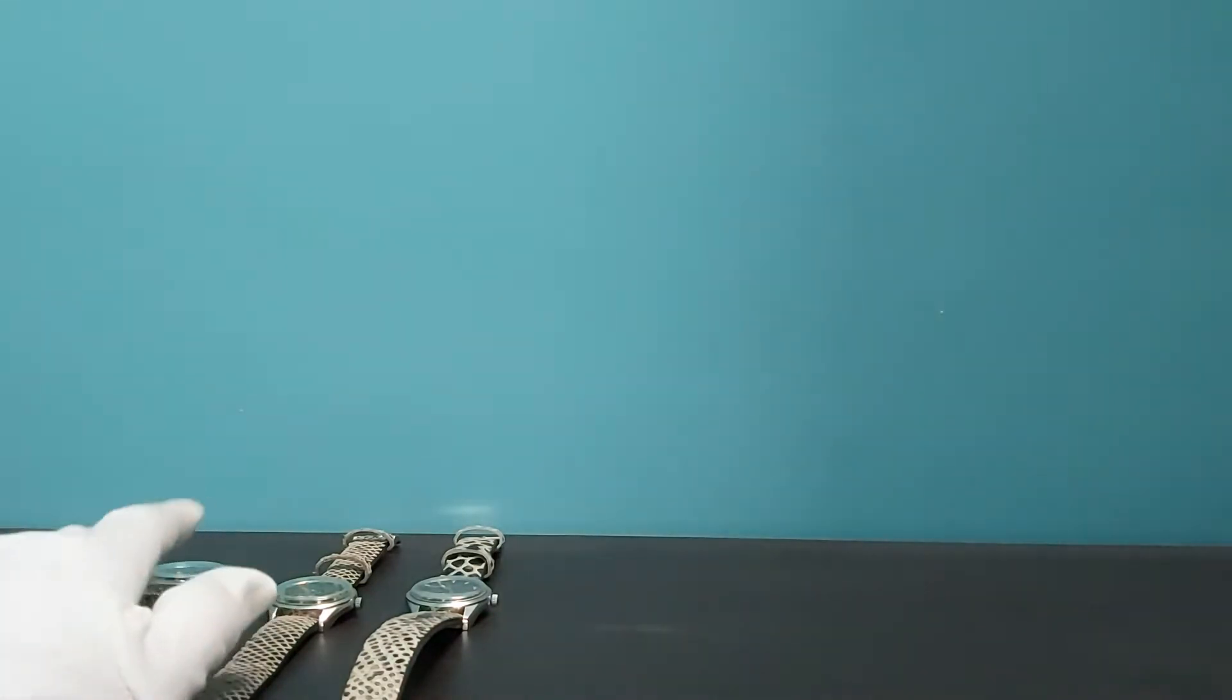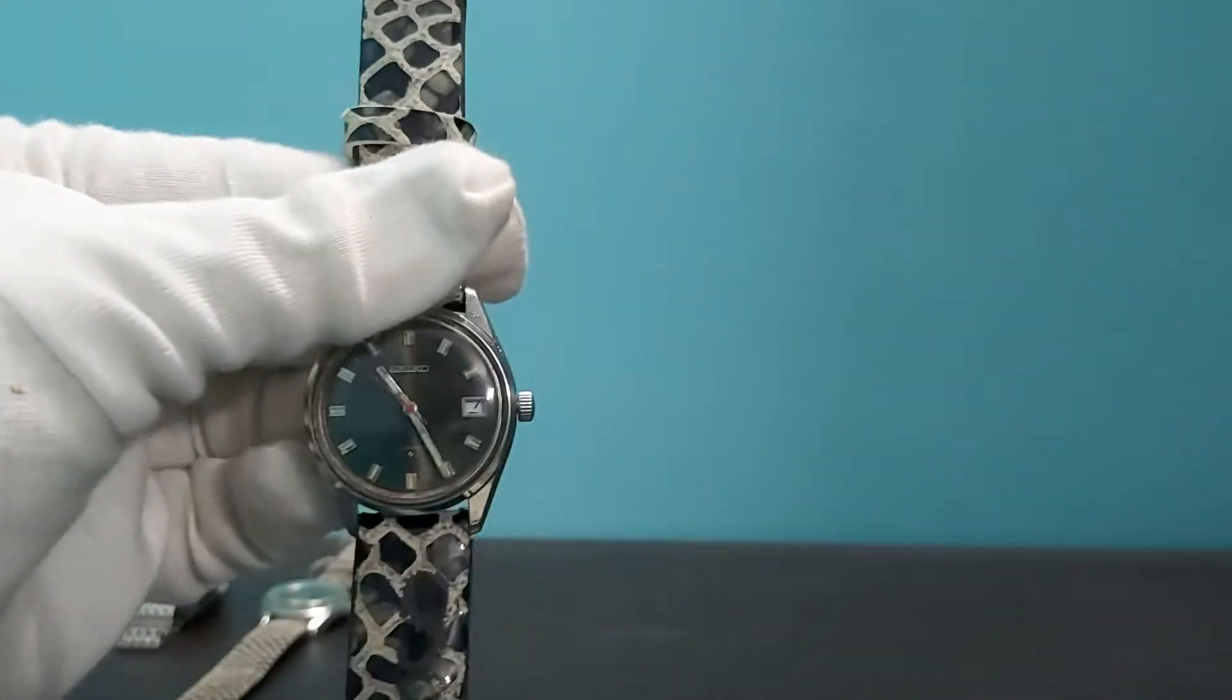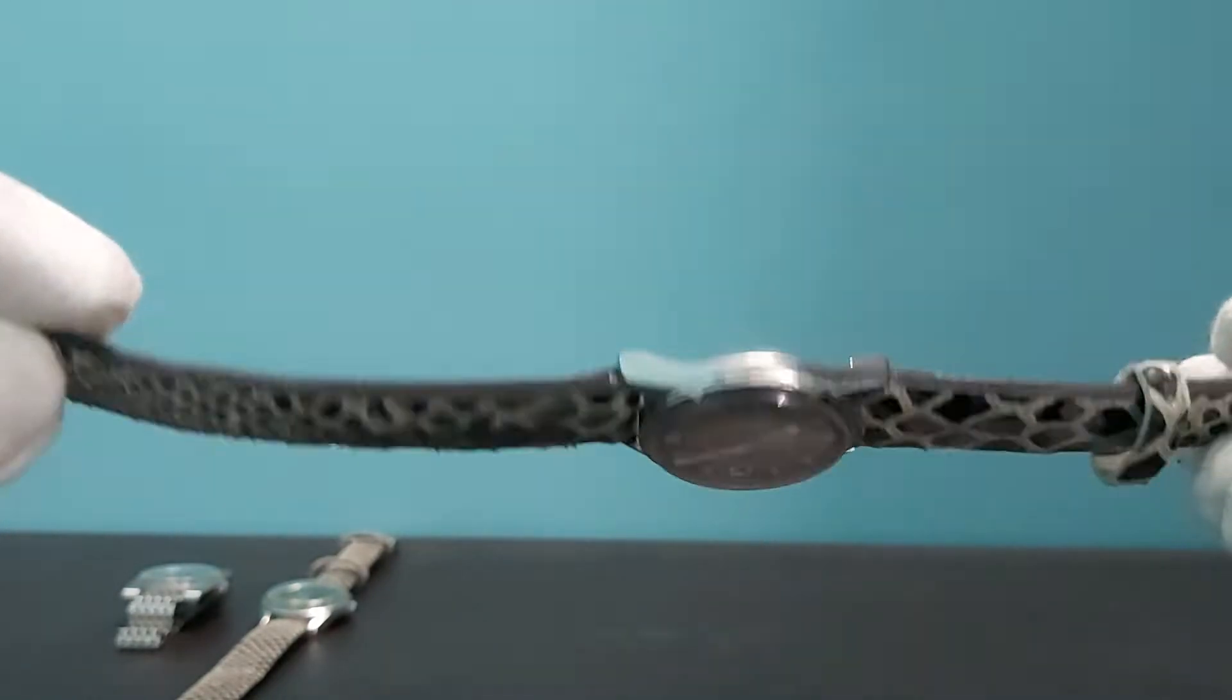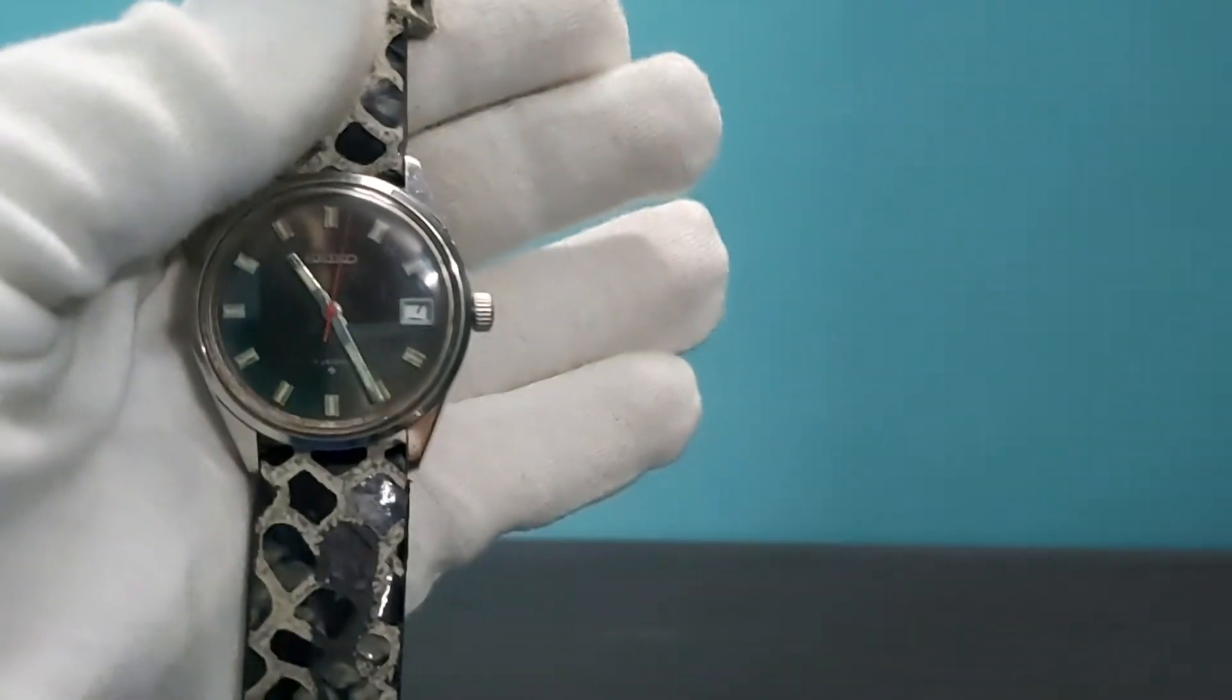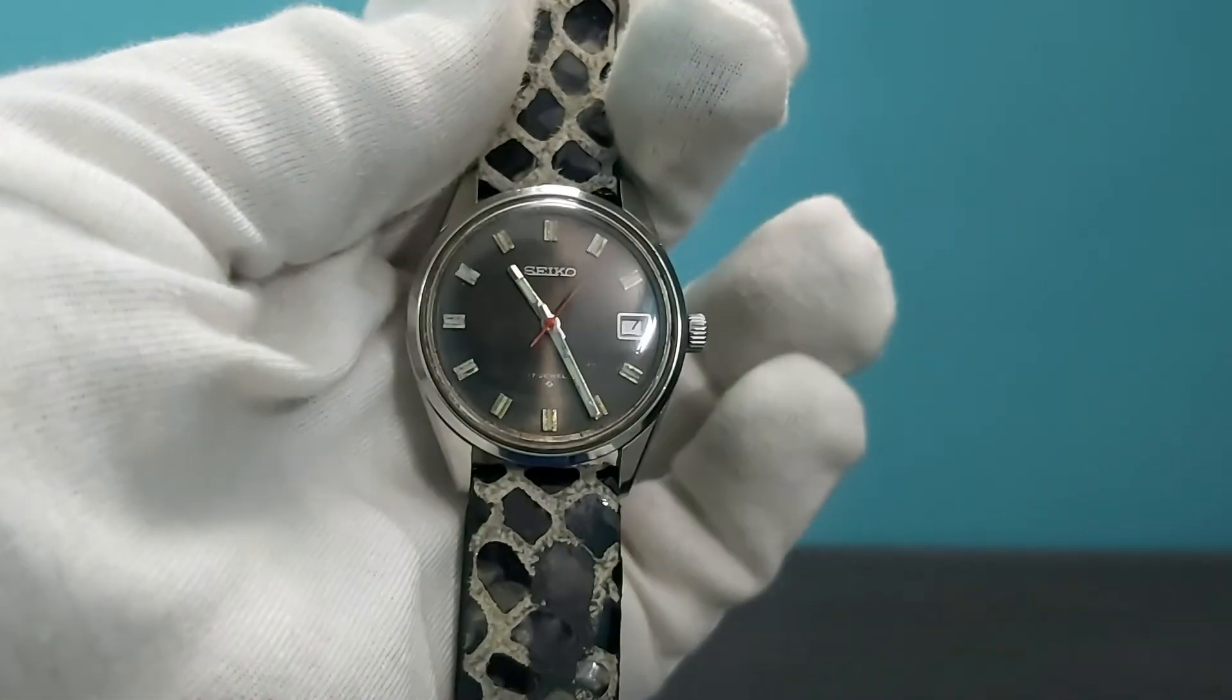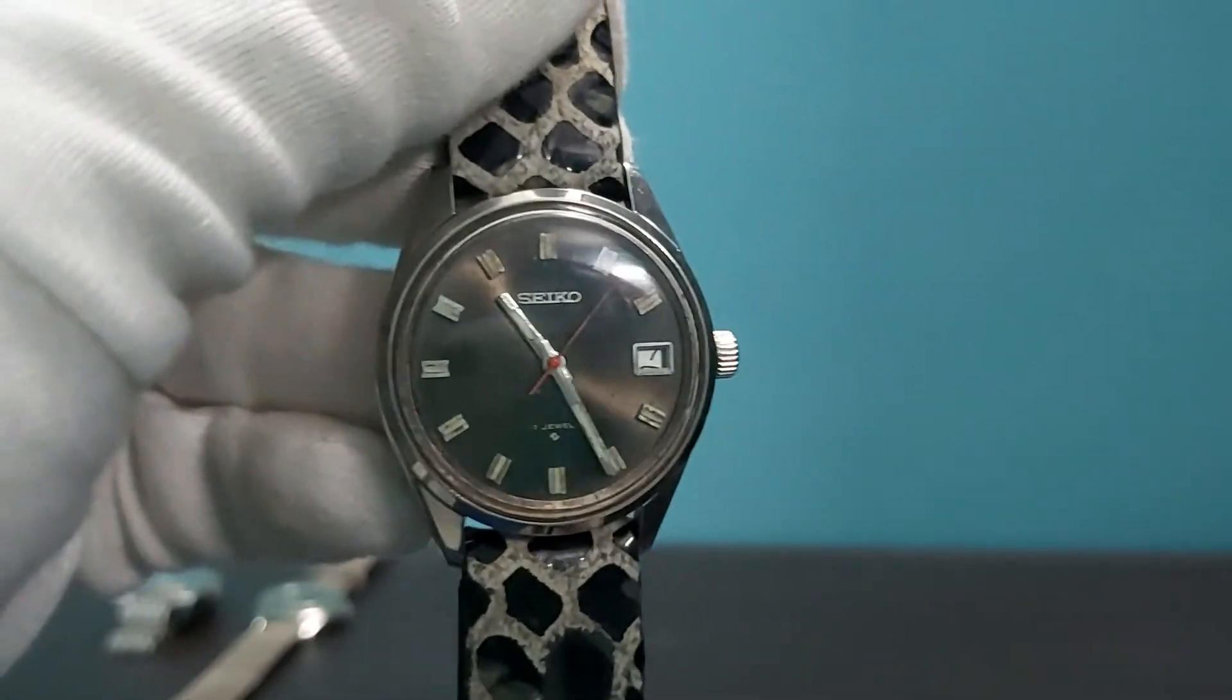Okay, now let's come to the hand winding models. Three models are here. This one is a 6602-7040. It's on a handmade leather strap, very good quality strap. It's also in working condition. It's a little worn out but it's not damaged anywhere. All working conditions are base movements.